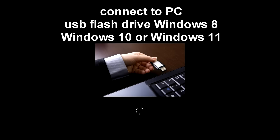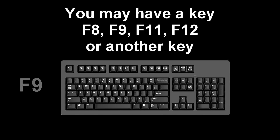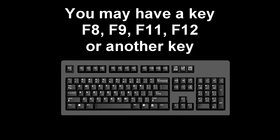Method number three. Connect the installation USB flash drive for Windows 8, 10, or Windows 11 to the PC. Turn on your PC and call the boot menu — immediately after the start of the reboot, constantly press the key on your keyboard to call the boot menu. I have the F9 key; you may have F8, F9, F11, F12, or some other key. You can see how to call the boot menu in my other video — the link is in the description.